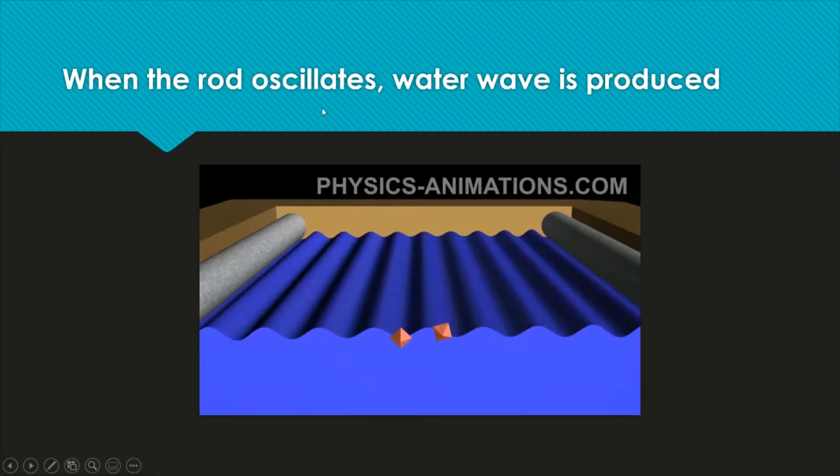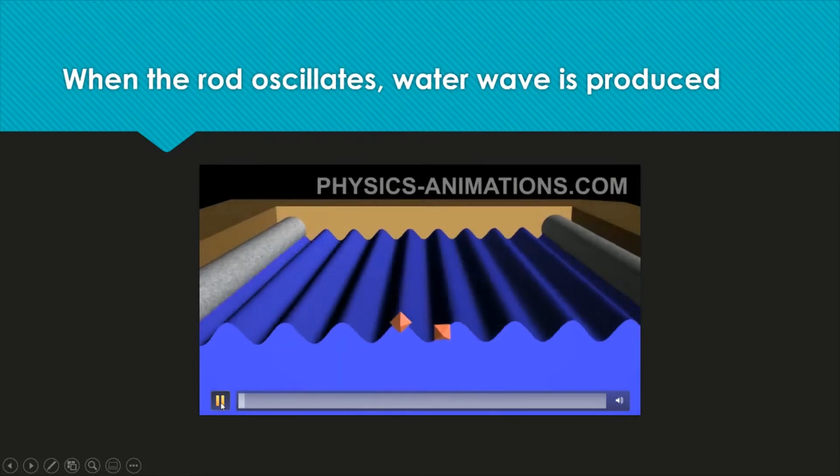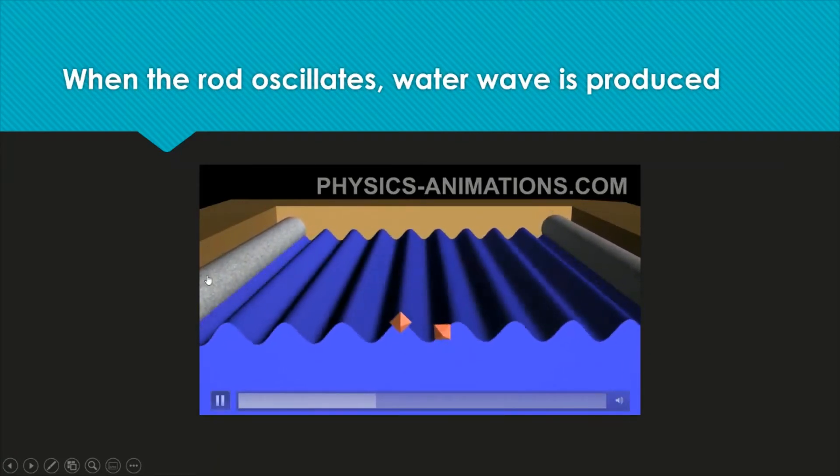How is water wave produced? Let's look at this animation here. As you can see, the rod is oscillating up and down on the surface of water. As the rod oscillates, water wave is produced. Ripples are produced.